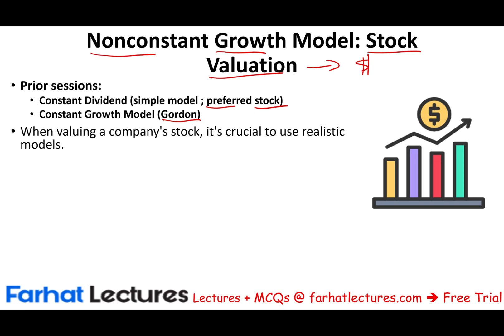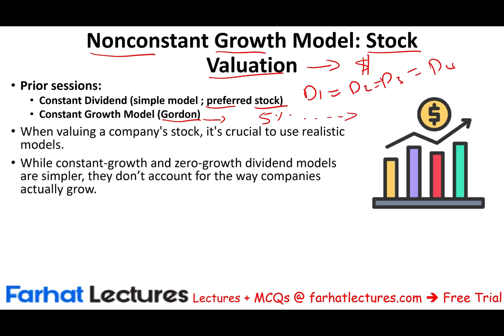Now, both of these models are not realistic for the real world. Why? Because common stock don't pay the same amount of dividend over time. So D1 is not always equal to D2, D2 is not always equal to D3. In the constant growth model, it assumes that the dividend grows at a certain percentage, like 5%, and it does so forever. Those are not realistic assumptions, but they are a good starting point to analyze the company.